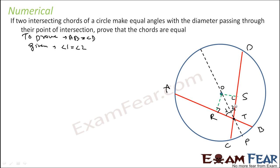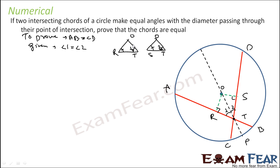If you see these two triangles — one is ORT and the other is OST — angle 1 is equal to angle 2, where angle 1 is RTO and angle 2 is OTS. We know these two angles are also equal. So we can see that two angles are equal and one side is equal — angle, angle, side — AAS.